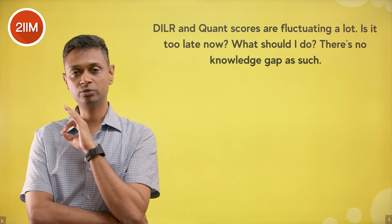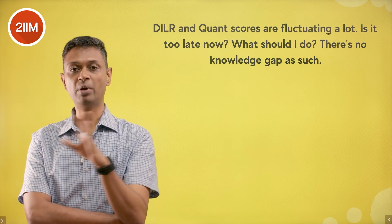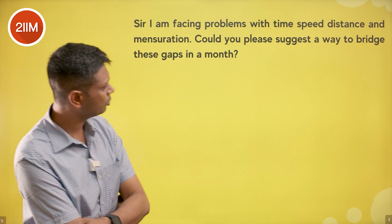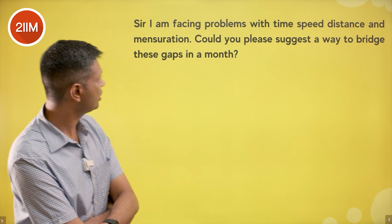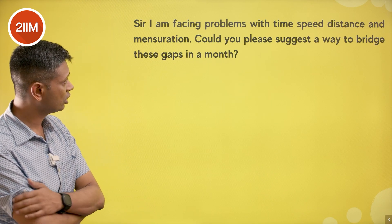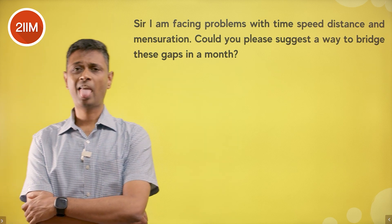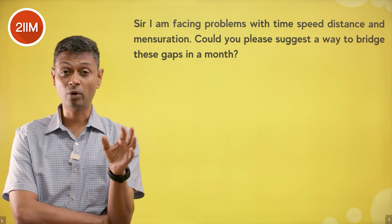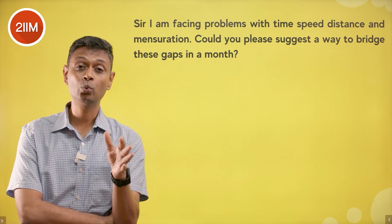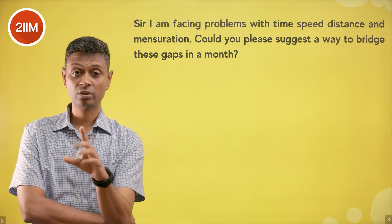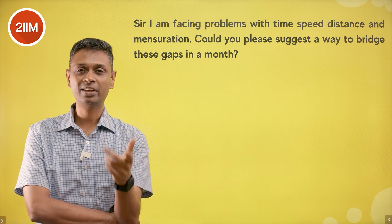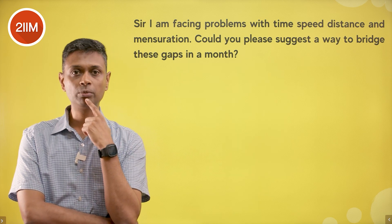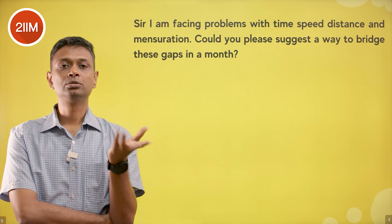Facing problems with time-speed-distance and mensuration — suggest a way to bridge these gaps in a month. It's a month. Mensuration is just formulas — write them down. Take one more topicwise test in each of these topics. If it doesn't fall in place, dump it.